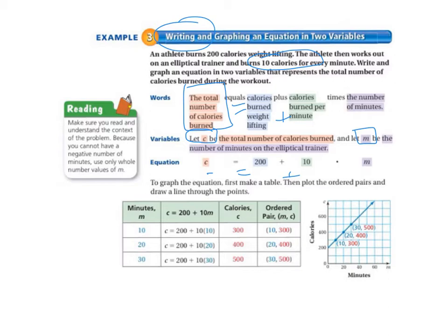We're just going to take a stab at some numbers. We're just going to use some numbers of minutes. So we're going to say that somebody, this athlete, works out for 10 minutes on the elliptical trainer. And so our equation is up at the top of our table: C equals 200 plus 10M. And we're going to plug in 10 for the number of minutes. So when we do that, that means they burned 300 calories. So our ordered pair is 10 for the minutes and 300 for the calories.